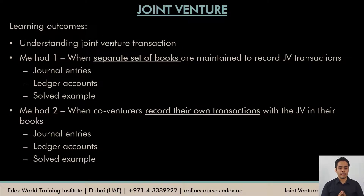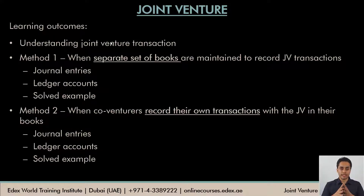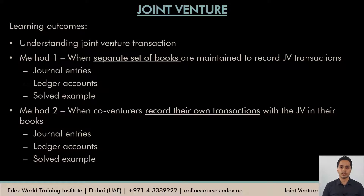We start the video by understanding what a joint venture transaction is, why one would want to enter into a joint venture, and what the difference is between a joint venture and a partnership firm. There are two methods of accounting for joint venture transactions. The first method uses a separate set of books for the joint venture business, covering journal entries, ledger accounts, and a solved example in part one. The second method, where each co-venturer records only his own transactions, will be covered in the second video.